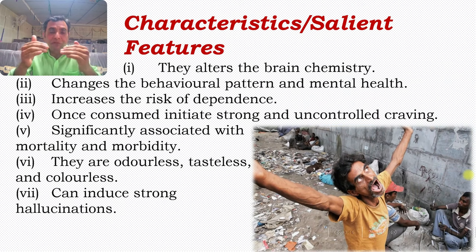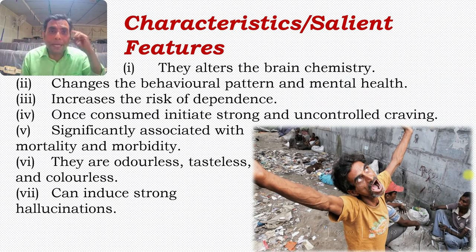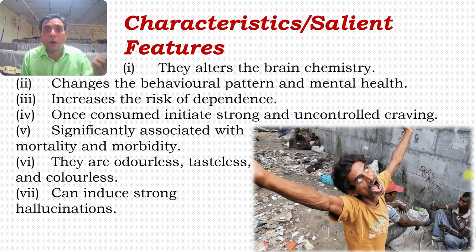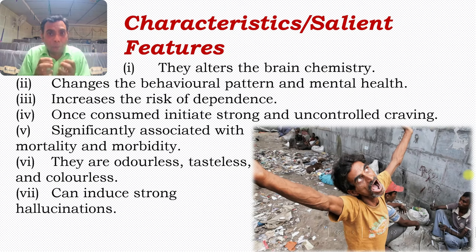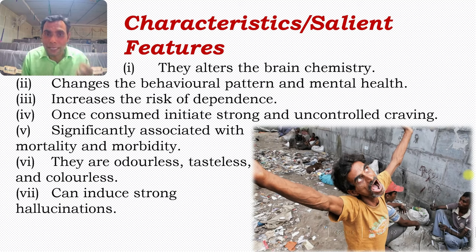Now let us look at the characteristics or salient features of drug abuse. First, they alter brain chemistry. Brain chemistry refers to the quantity of chemicals in the brain, their intensity of release, timing of release, their activity and their role — all of these are altered by the consumption of illegal or legal substances.